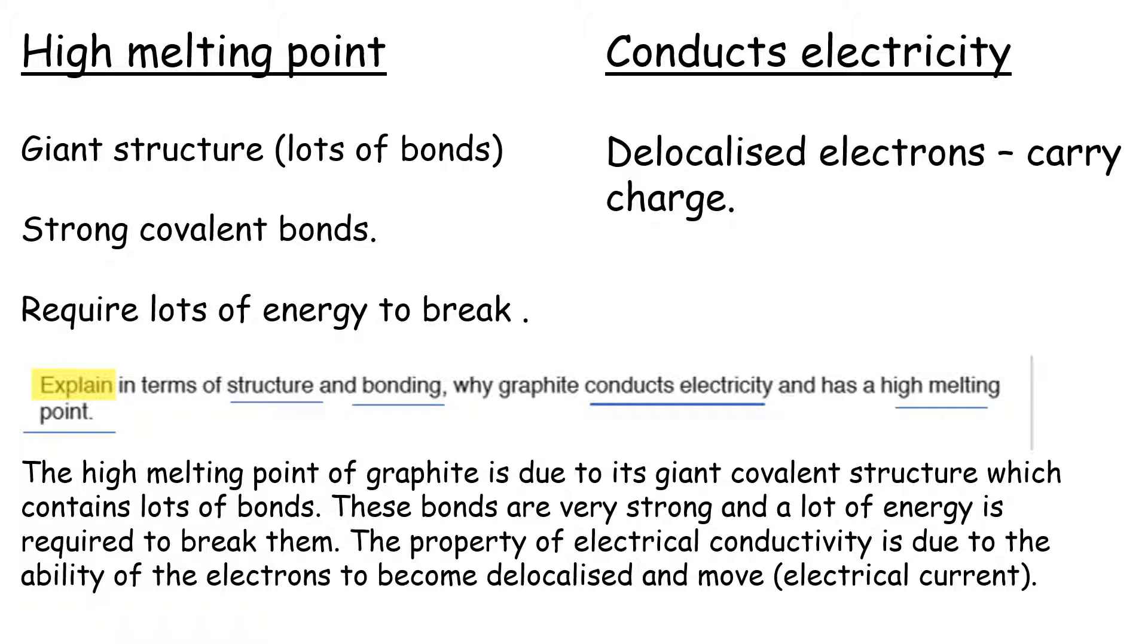So let's put those points together. The high melting point of graphite is due to its giant covalent structure which contains lots of bonds. These bonds are very strong and a lot of energy is required to break them. The property of electrical conductivity is due to the ability of electrons to become delocalized and move electric current. That sounds pretty good and it all came from that little plan. I think that looks like about four marks, so let's move on.